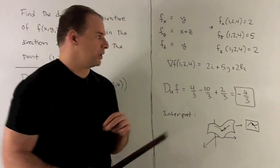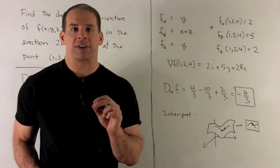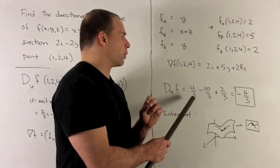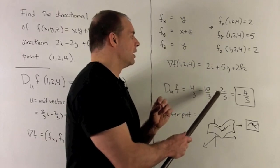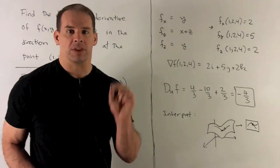So now what are we going to do? We're going to take this vector, take the dot product with our unit vector. What comes out? We're going to have 2 times 2/3 gives me 4/3, minus 2/3 times 5 gives me minus 10/3, and then 2 times 1/3 gives me 2/3. So what comes out is minus 4/3.